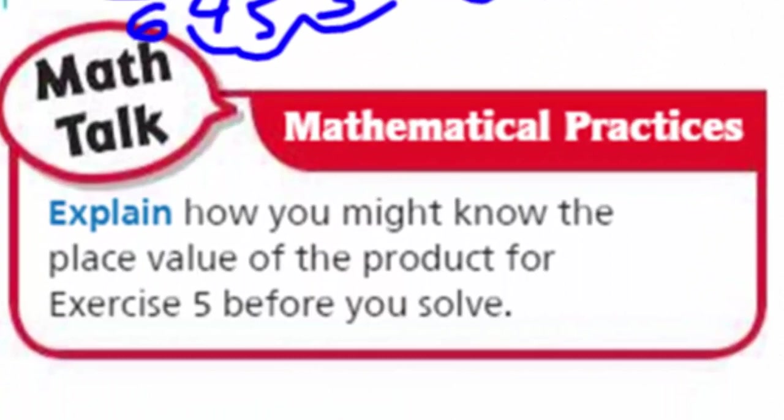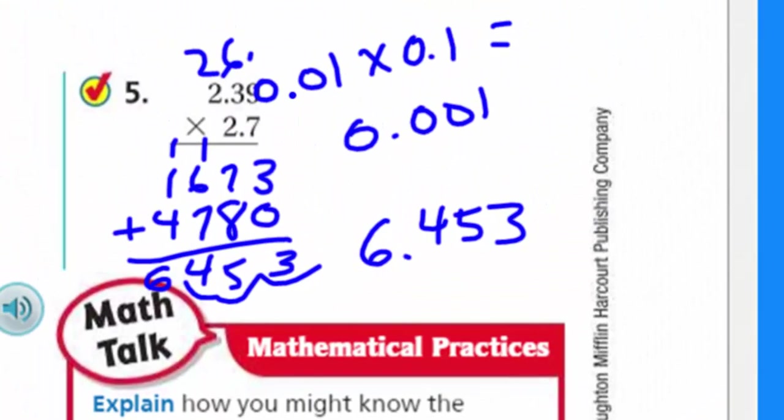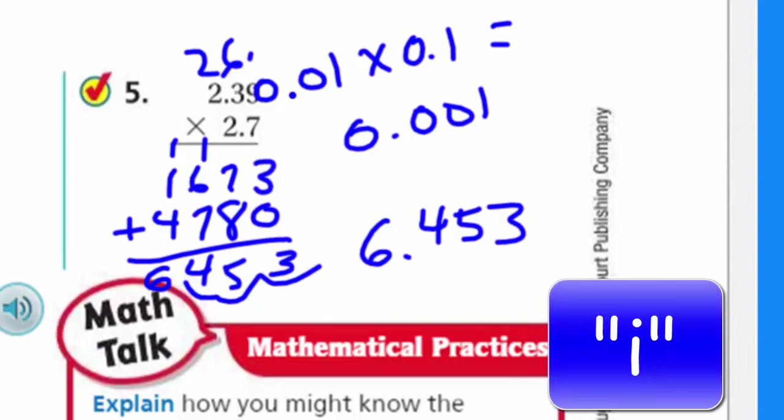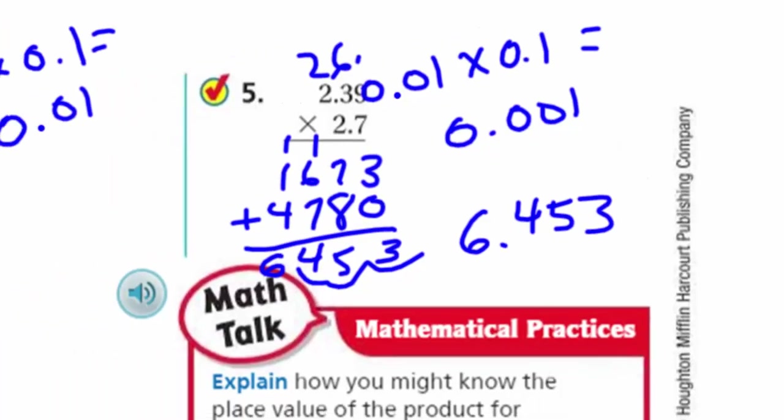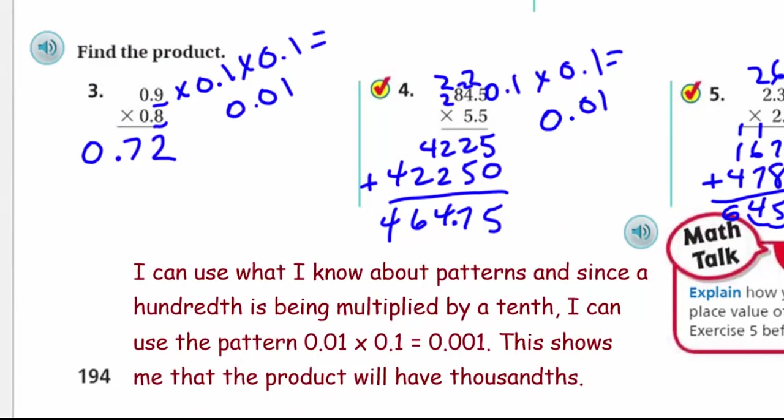Now this is Math Talk, Mathematical Practices. So we're going to explain how you might know the place value of the product for exercise five before you solve. We looked at this one time before, another problem. There was a similar question. Well, see, we're going to be recognizing the pattern here. I can use what I know about patterns. And since a hundredth is being multiplied by a tenth, I can use the pattern that 0.01 times 0.1 is equal to 0.001, which is 1 thousandth. This shows me that the product will have thousandths. I can use what I know about patterns, and since a hundredth is being multiplied by a tenth, I can use the pattern 1 hundredth times 1 tenth is going to equal the thousandth. This shows me that the product will have thousandths.